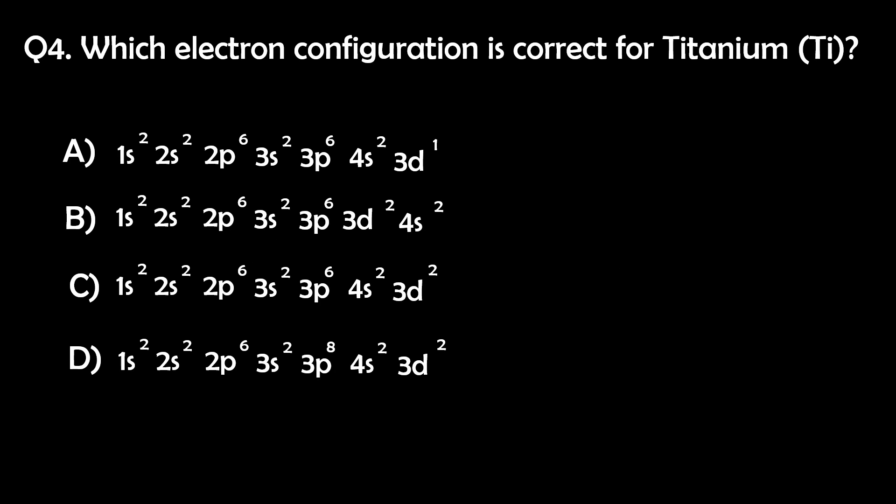Question 4. Which electron configuration is correct for titanium? The correct answer is C. So let's explain this.